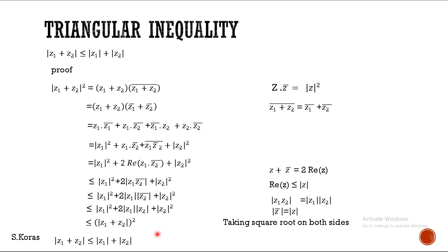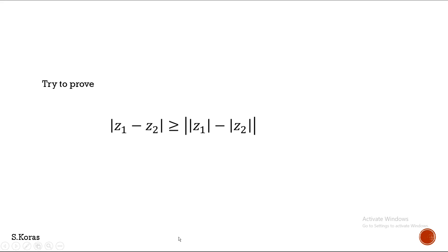Now, the same way you can try to prove the same triangular inequality in another form. There is another thing you can try by yourself: that is, modulus of Z1 minus Z2 is greater than or equal to the absolute value of modulus of Z1 minus modulus of Z2. Try to do this following the same method we followed for modulus of Z1 plus Z2.